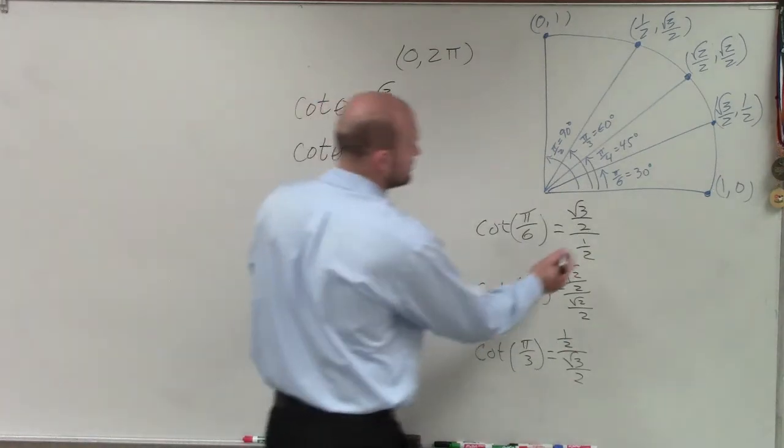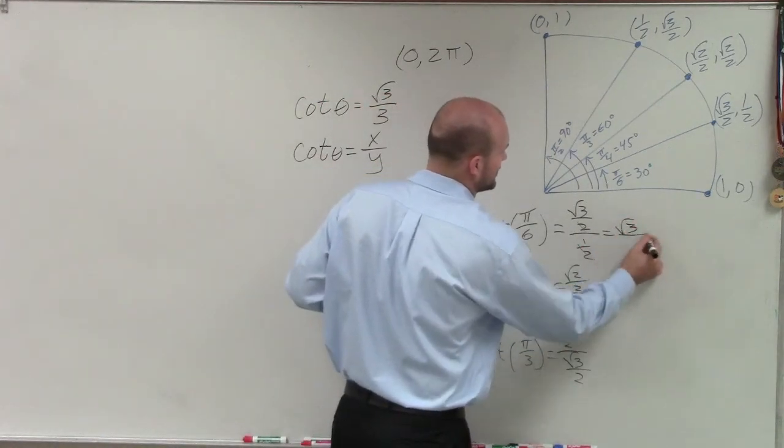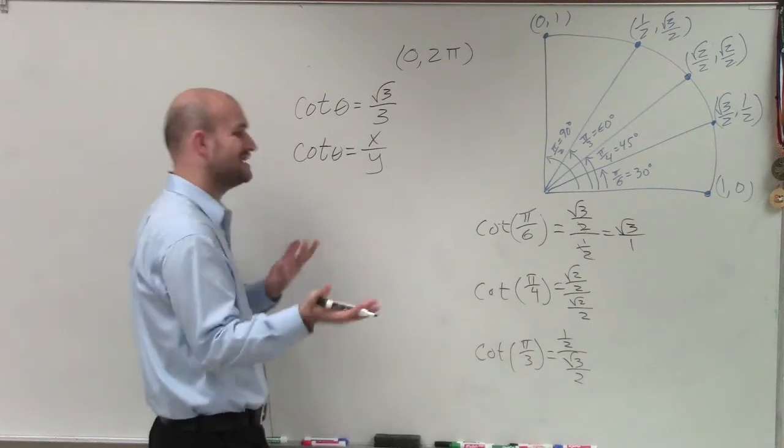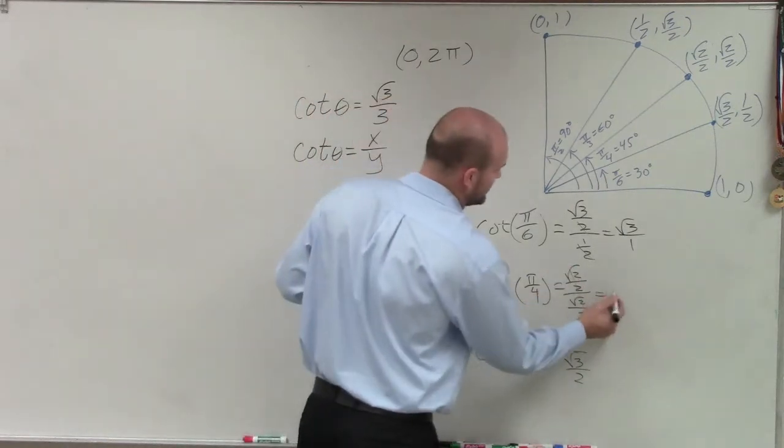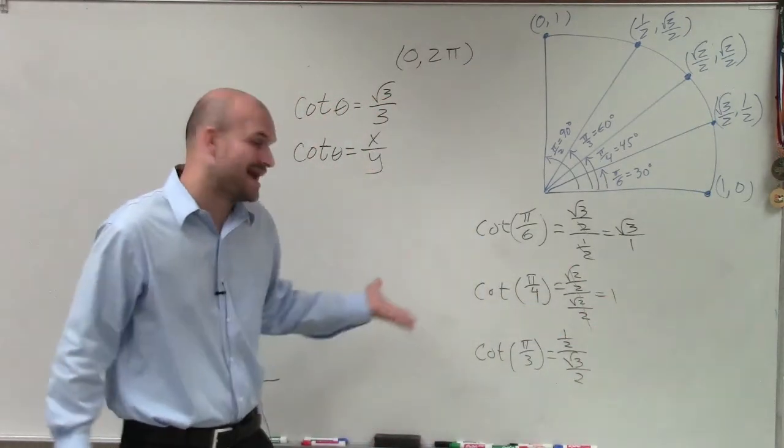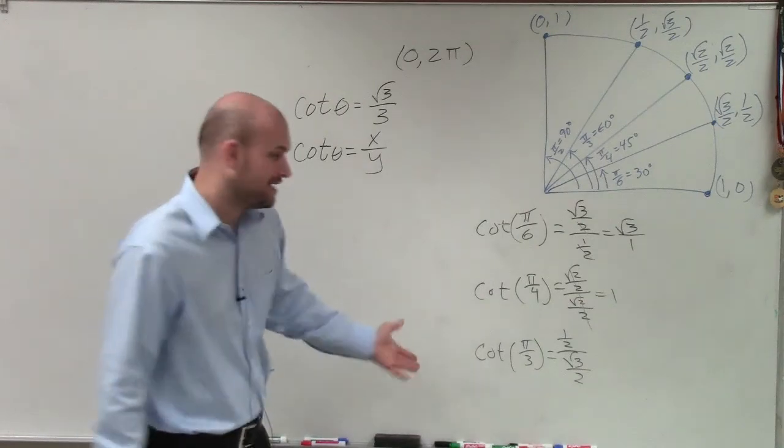Well, here, my 2's divide out. So therefore, I'm left with square root of 3 over 1. Well, close, but not exactly correct. This one just goes to 1. So therefore, we know our answer has to be our angle pi thirds.